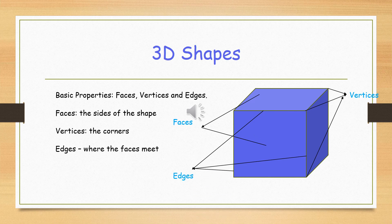Now, we're going to talk a little bit about the basic properties of a 3D shape. You get faces, vertices, and edges. The faces are the sides of the shapes. There you will see the faces.